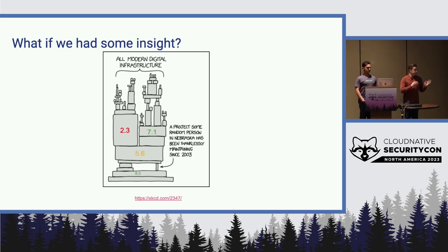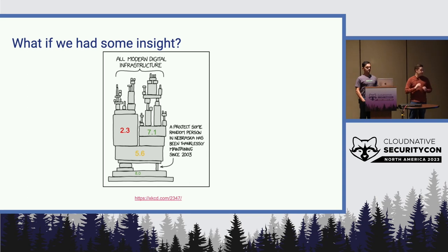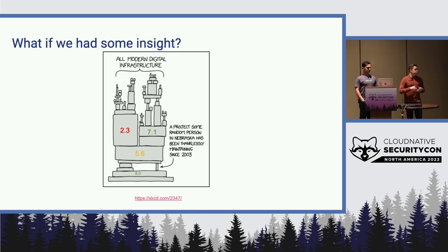Imagine if we could start looking at these dependencies and get a little bit of extra information. Imagine if we had numbers that gave us a sense that this dependency is in a really good state — its maintainers care a lot about security and are really trying their best to follow good principles and good development practices — versus here are some projects that actually aren't doing that at all. And then here are some projects that maybe they're trying, but they've still got a little ways to go. Just having that sort of insight opens up the world to us in terms of what decisions we want to make and what we should do with these dependencies.